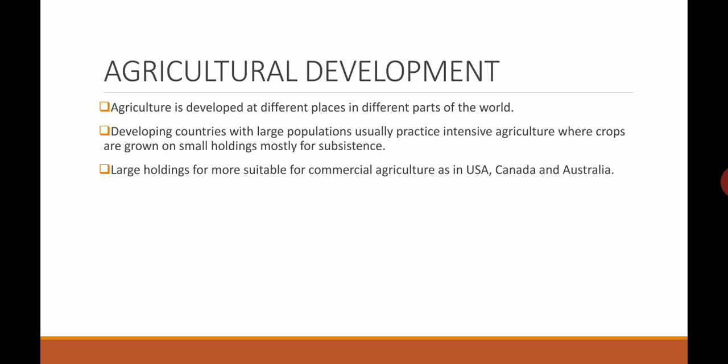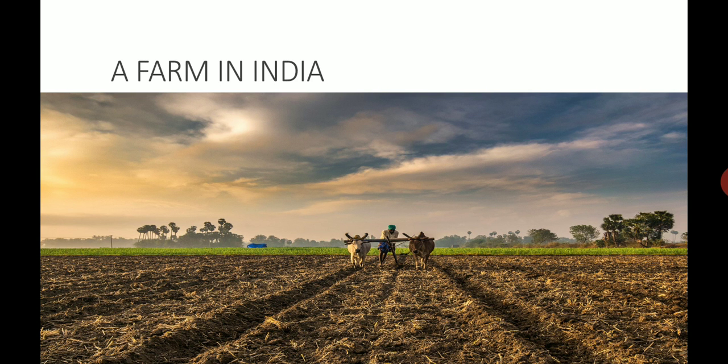Agriculture is developed at different places in different parts of the world. Agriculture development can be of different types. Developing countries with a large growing population usually practice intensive agriculture, where crops are grown on very small land holdings. Large holdings are suitable for commercial agriculture, which is practiced in USA, Canada and Australia.